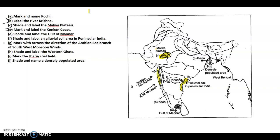Mark with arrows the direction of the Arabian Sea branch — you can see the southwest monsoon; they have given you two options. Shade and label the Western Ghats — these are the Western Ghats. Mark the Jharia coalfield — this is Jharia coalfield, this dot. Shade and name a densely populated area — they have marked this part which is West Bengal.